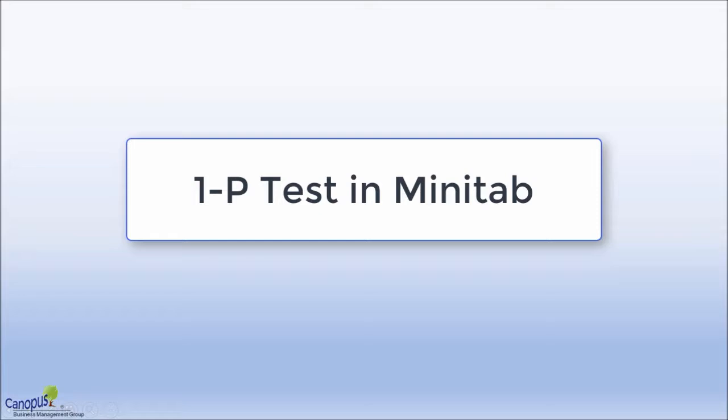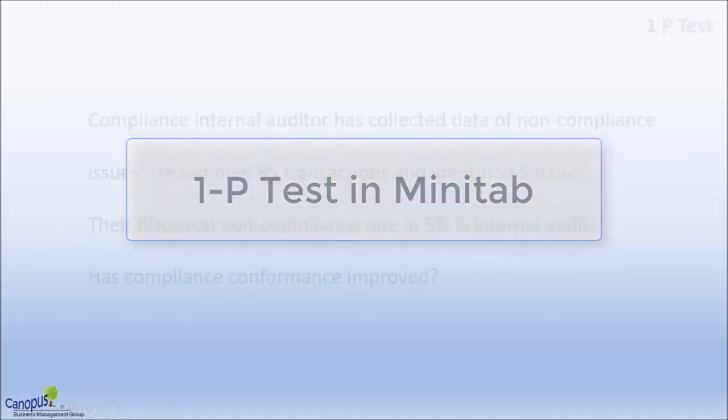We will start with the 1P test. The P here represents proportion, so similar to a 1-sample t-test, we want to compare one proportion against a standard.